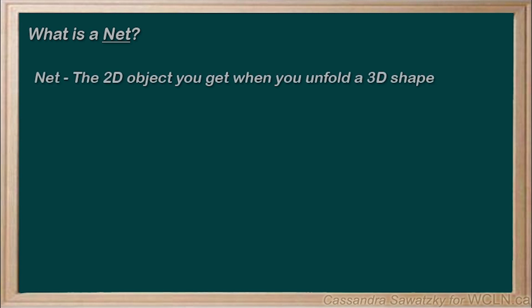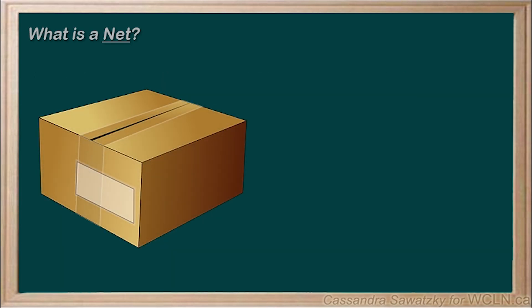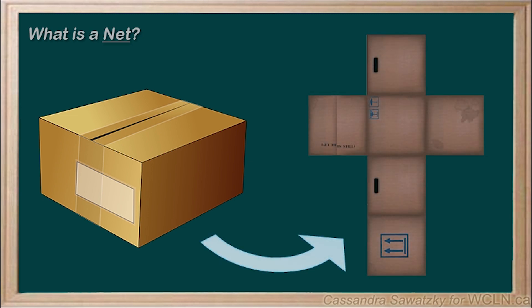You can think of a net as the two-dimensional object that you get from unfolding a three-dimensional shape. For instance, if you took a box, a three-dimensional object, and cut down the corners, you'd have a flat, or two-dimensional, net. The resulting flat cardboard on the floor is the net.